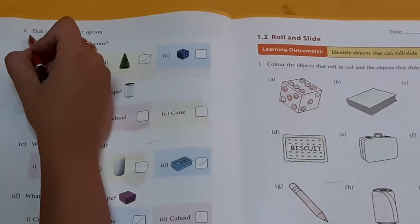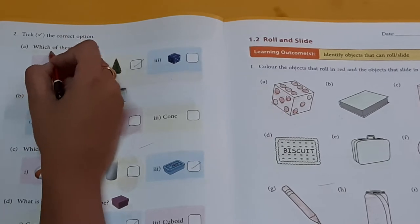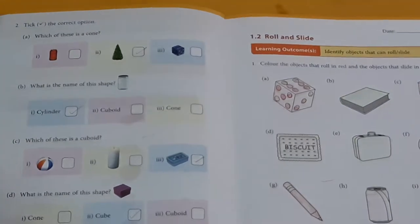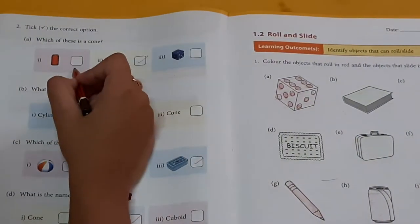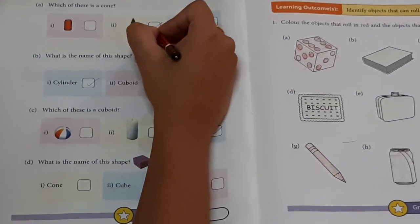Second question. Tick, write the correct option. Which of these is cone? Is it cone? No. Is it cone? Yes. Then, tick.